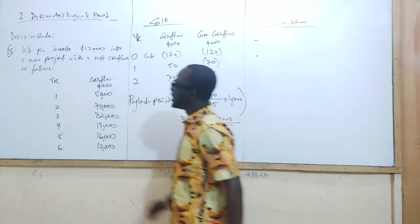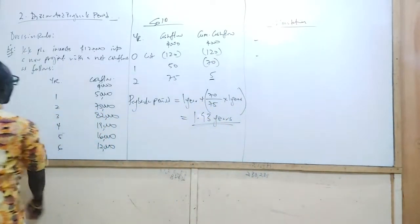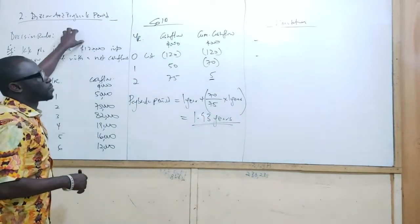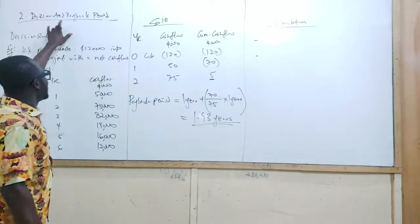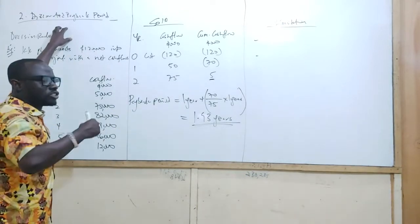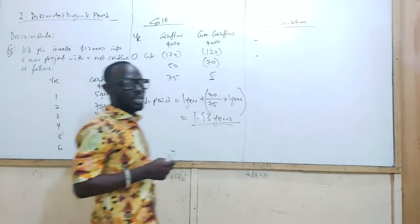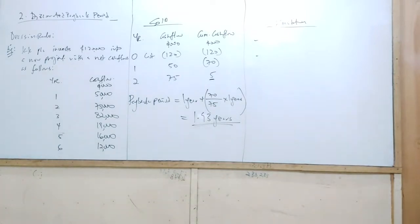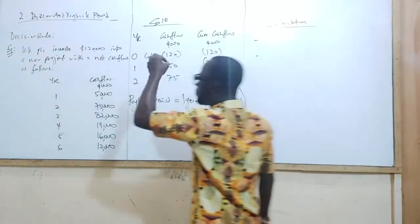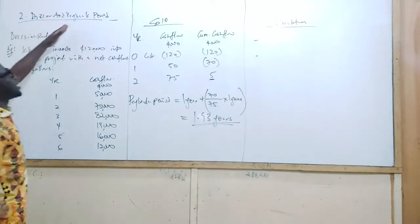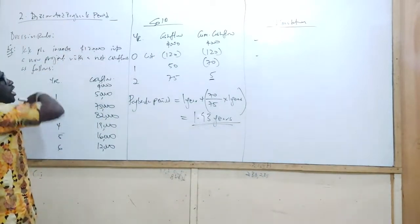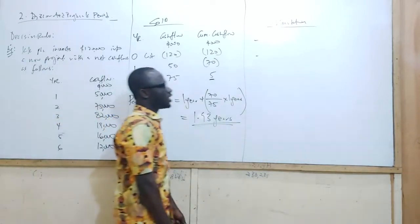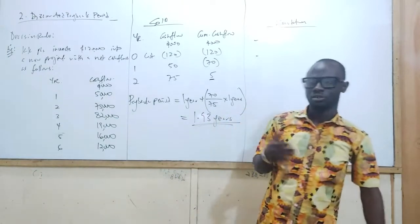Let's look at the second one: Discounted Payback Period. Remember the definition we took in the payback period? We said how long it takes. So this time around it's the same definition, but this time around it's going to consider the time value of money. So we said how long it takes to recover the initial cost of a project, taking into consideration the time value of money.